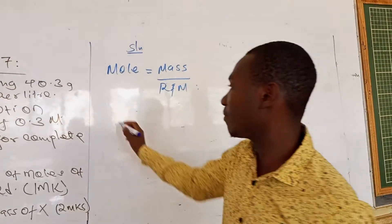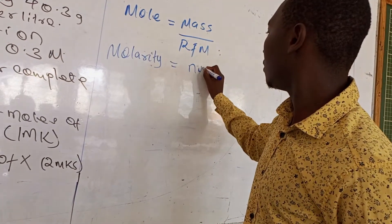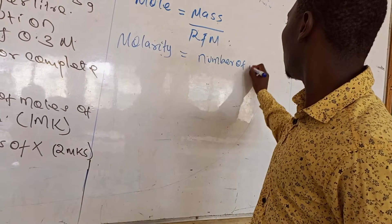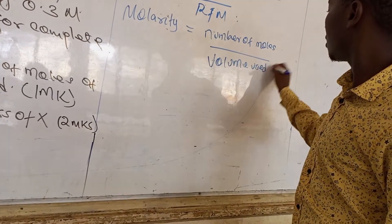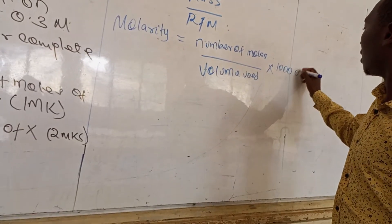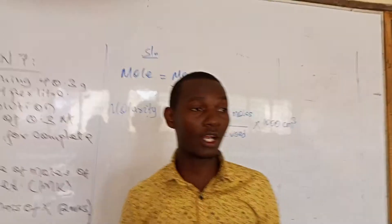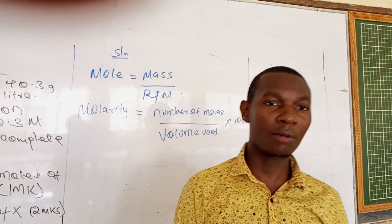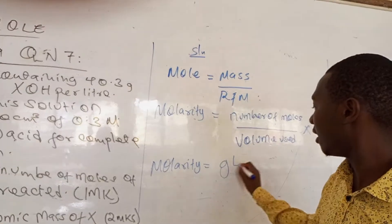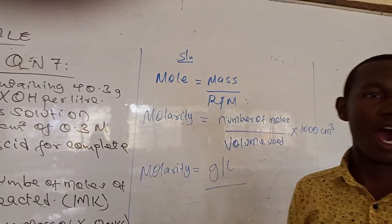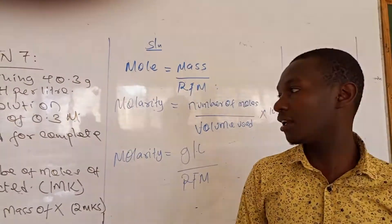Another formula you can use is: mole is equal to number of moles over the volume used, mostly by 1000 cubic cm or 1 litre. Mole is always calculated in mol. We can also calculate mole using grams per litre: concentration in mol is equal to grams per litre all over RFM. With these three formulas we can calculate all questions of mole regardless of the question.